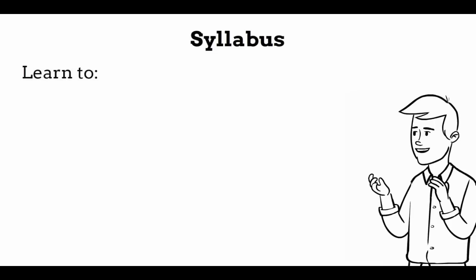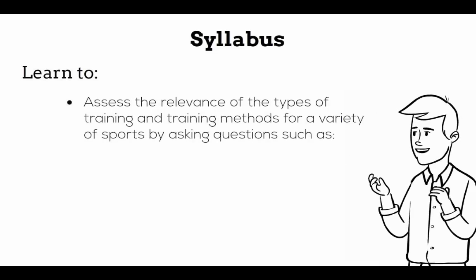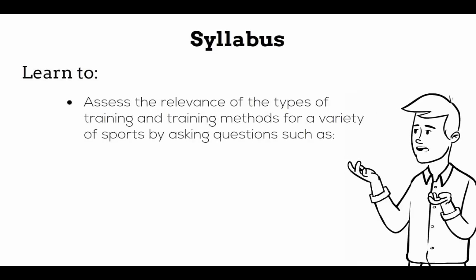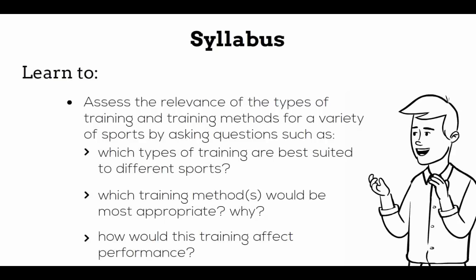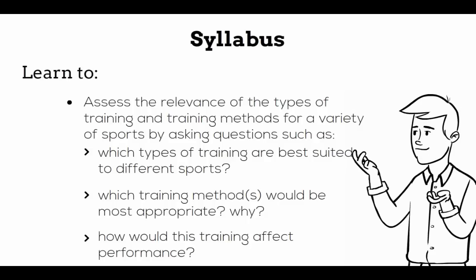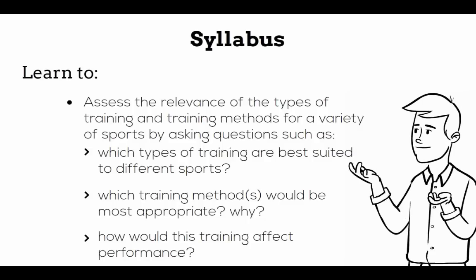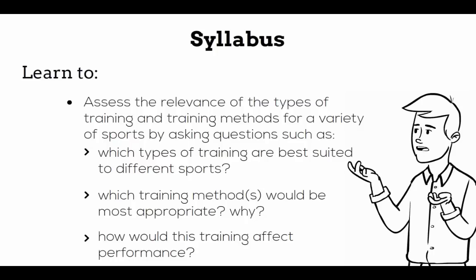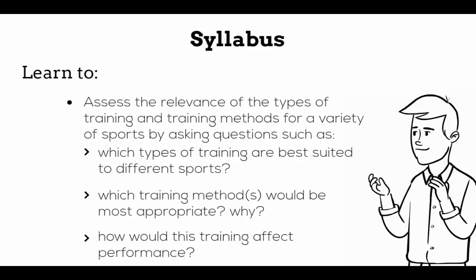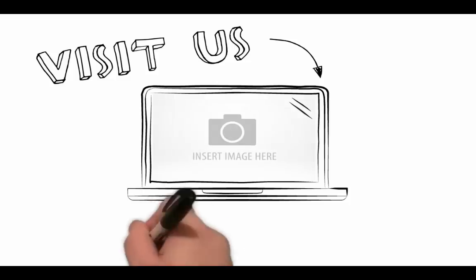The learn to for the syllabus asks you to assess the relevance of the types of training and training methods for a variety of sports by asking questions such as which types of training are best suited to different sports, which training methods would be most appropriate and why, and how would this training affect performance. We've dropped out a few of your answers for these questions and we'll discuss them in class. If you want further information, please visit the website pdhpe.net.